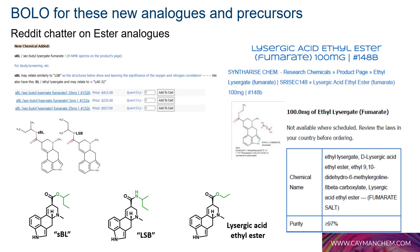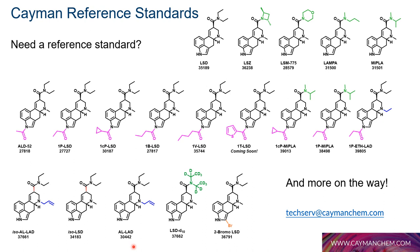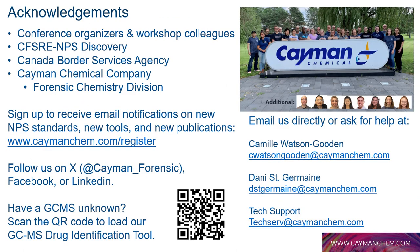Keep an eye out for these compounds in your spectra. If you encounter a spectrum where you suspect a lysergamide, a wide variety of reference standards are available, with 1T-LSD coming soon — check the website in the coming weeks. For GC-MS unknowns or direct inquiries, use the GC-MS Drug Identification Tool via the QR code or contact the team at TechServe at kamenchem.com.